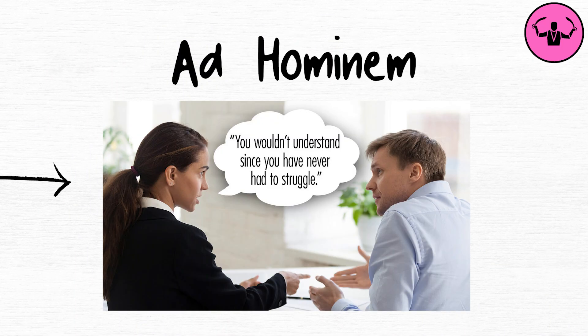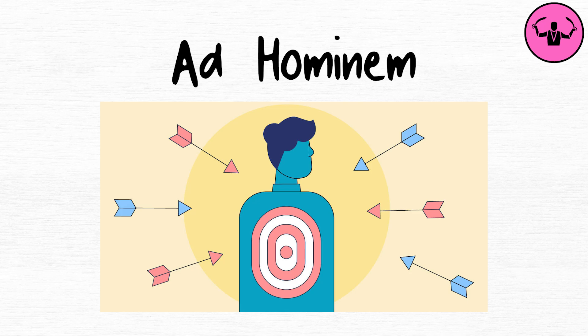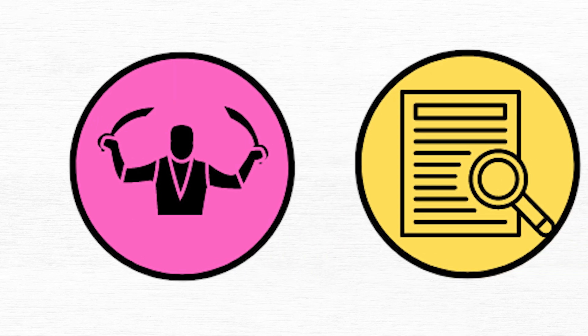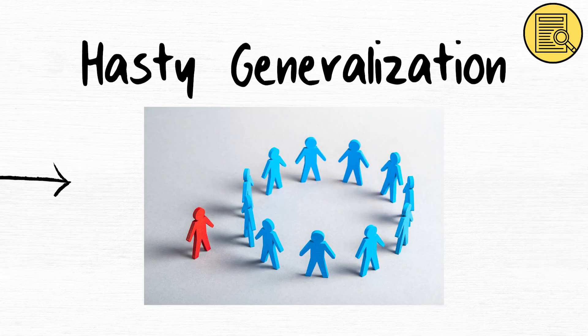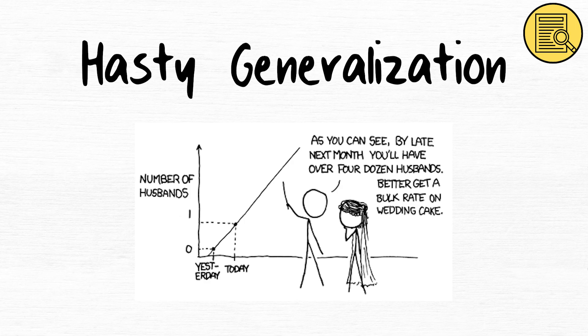Ad hominem. The ad hominem fallacy occurs when someone tries to discredit an argument by attacking the person making it rather than addressing the argument itself. Hasty generalization, also known as the overgeneralization fallacy, happens when a claim is made based on insufficient evidence.